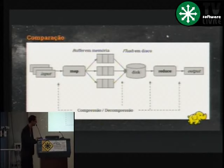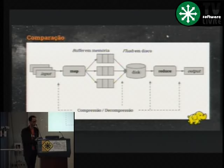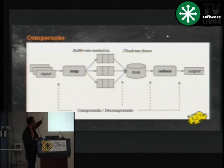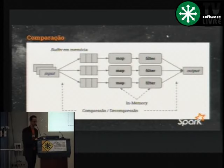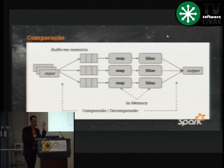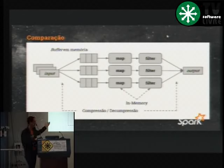Uma outra diferença importante é o overhead que tem quando você está usando o MapReduce da suite Hadoop — você tem decompressão, compressão, flush em disco a cada etapa Map Reduce. Você tem seus dados, aplica Map, carrega em memória, faz flush em disco, a próxima etapa de Reduce vai carregar esses elementos — existe um certo overhead. O bacana do Spark é que, uma vez que você carrega em memória, as funções de Map, Filter, todas elas vão sendo aplicadas nos elementos em memória nas partições ao longo do cluster. Enquanto você tiver memória, ele não precisa paginar dados para disco.